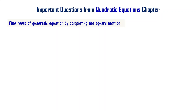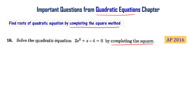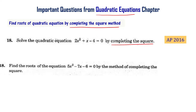Find the roots of a quadratic equation by completing the square method — another one of the important topics from the quadratic equations chapter. Solve the quadratic equation 2x² + x - 4 = 0 by completing the square. Also, from the AP final exam 2016, find the roots of 5x² - 7x - 6 = 0 by the method of completing the square.